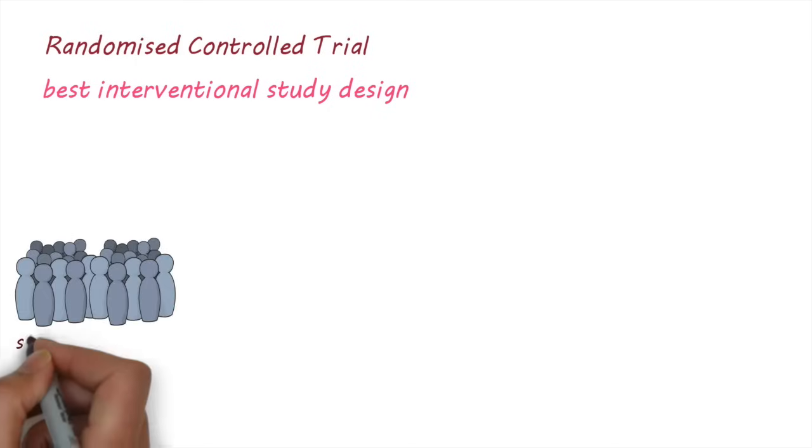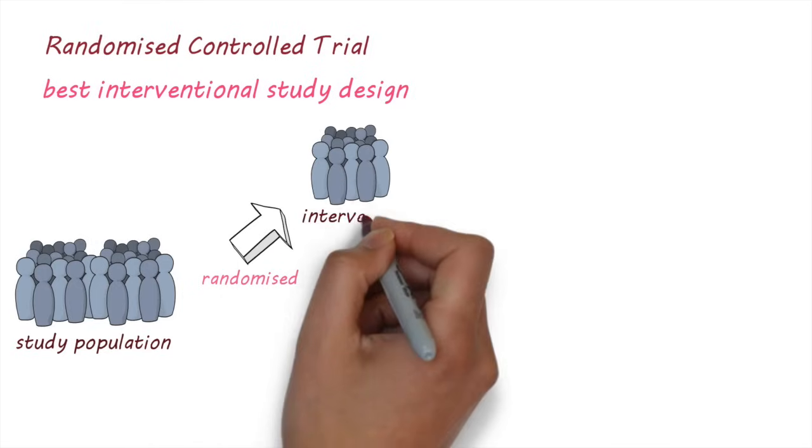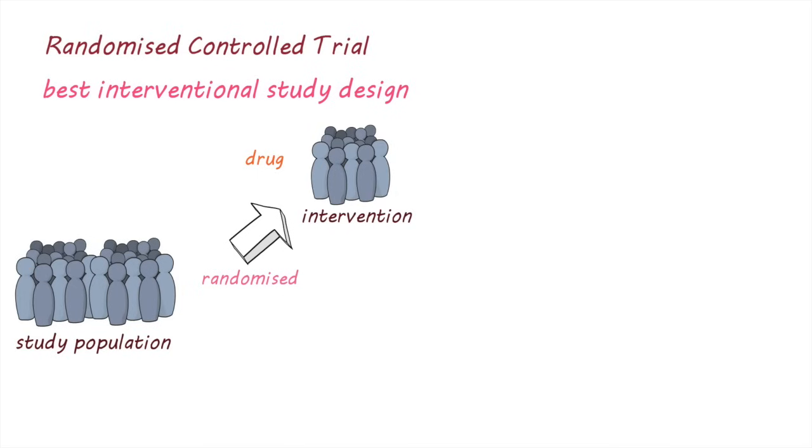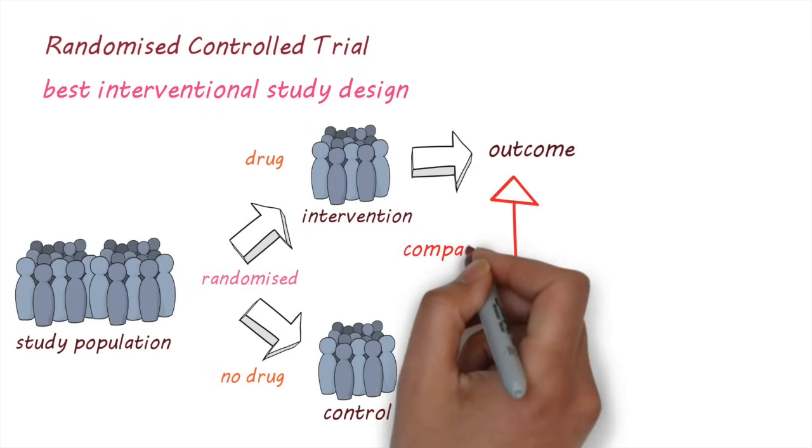Say we want to study the effects of a new drug. We start off with a study population. People are then randomly allocated to be in the intervention group, where they receive the drug, or in the control group, where they don't receive the drug. Then, after a suitable time period, the outcomes in the two groups are assessed and compared to see what effect the drug had.